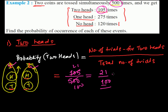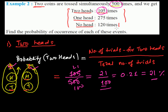In decimal form that is 0.21. If you want to convert to percentage, multiply by 100, which gives 21%. So the probability of getting two heads is 21/100, or 0.21, or 21%.